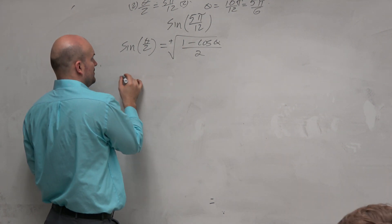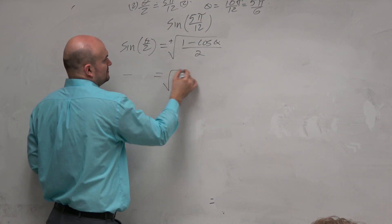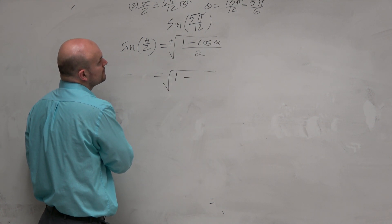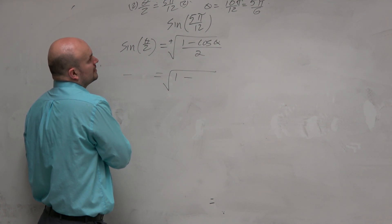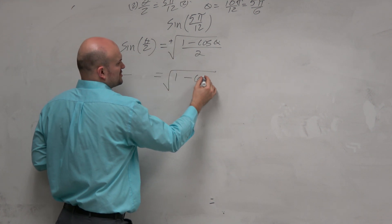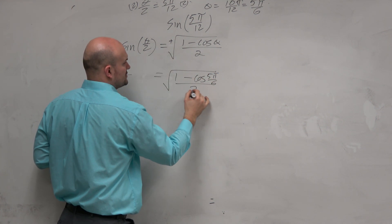So let's go and evaluate for the cosine. It's 1 minus cosine of theta, which is 5π over 6. Let's just write it in there so we can practice that, all over 2.